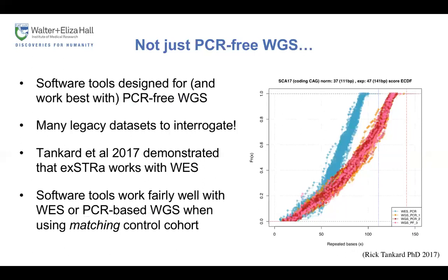However, there are many legacy data sets generated using different sequencing technologies that would be impractical to resequence, but very interesting to interrogate. The Tankard et al. paper demonstrated that ExSTRa works with WES and PCR-based WGS in addition to PCR-free WGS, and we've shown that all tools work fairly well with some caveats. One very important point: when performing outlier testing, the controls must have the same platform. The ECDF from ExSTRa shows a significantly different distribution for WES data compared to WGS data for this particular locus.